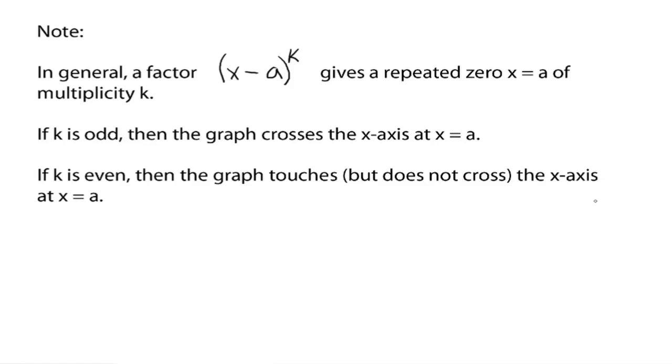So that's the note. If you have a repeated zero, then if the multiplicity is odd, then the graph crosses the x-axis at that zero. If the multiplicity is even, then the graph just touches the x-axis but does not cross at x equals a.